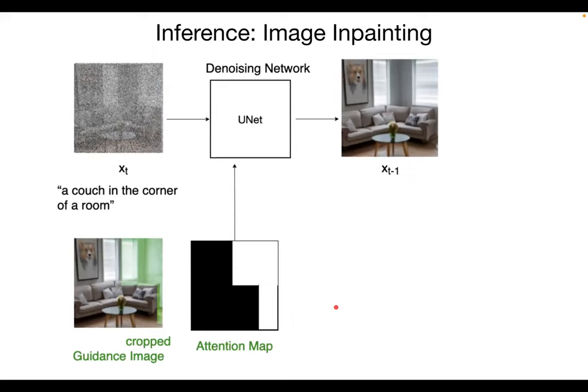During inference, you have a starting image, the user marks a region, and you construct an attention map trivially since you know the marked region. Starting from a noisy image, the network replaces the user-selected region with the desired content — for example, placing the couch in the corner. This is the only change needed to modify the naive GLIDE model from unconditional text-to-image generation to semantic image inpainting.